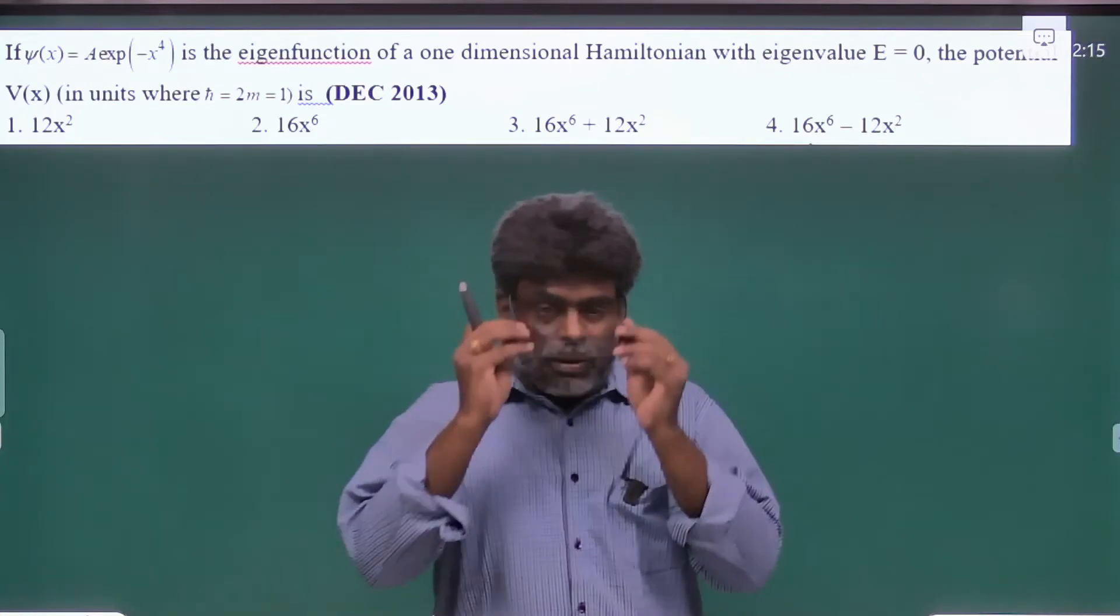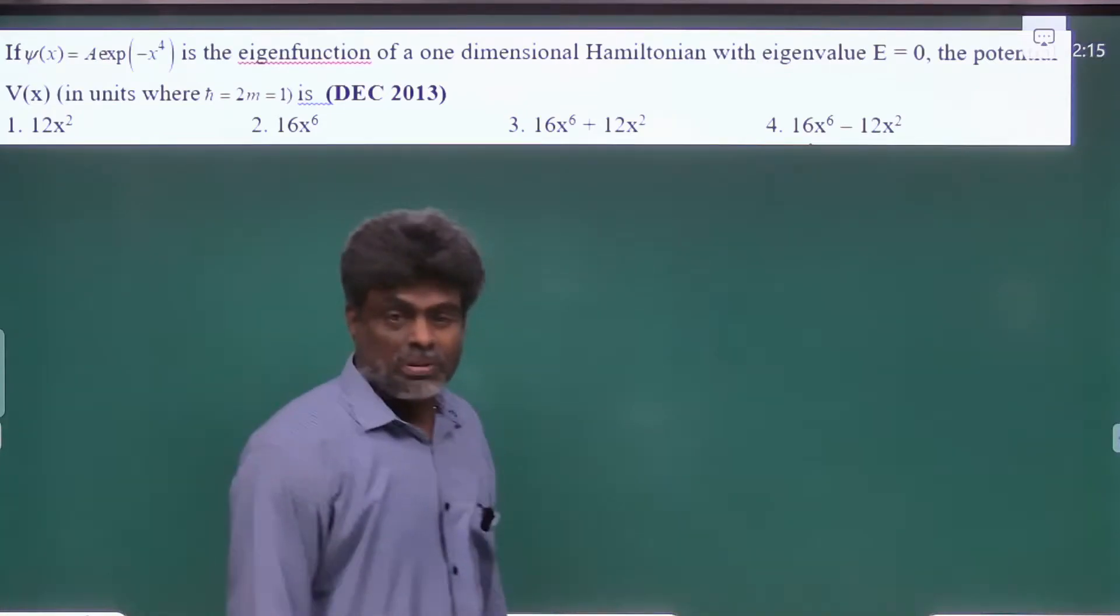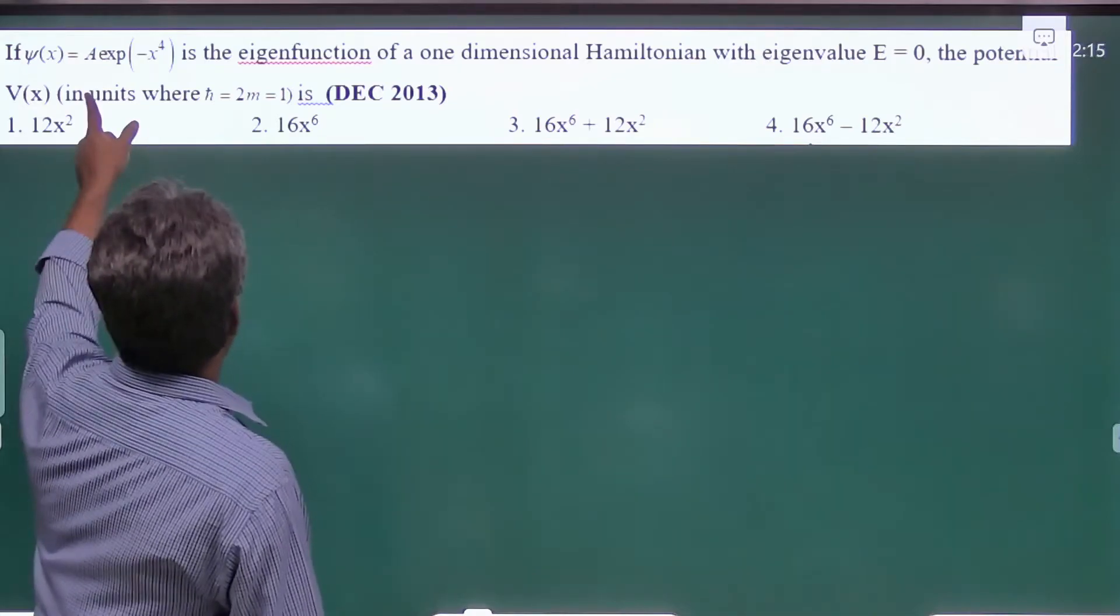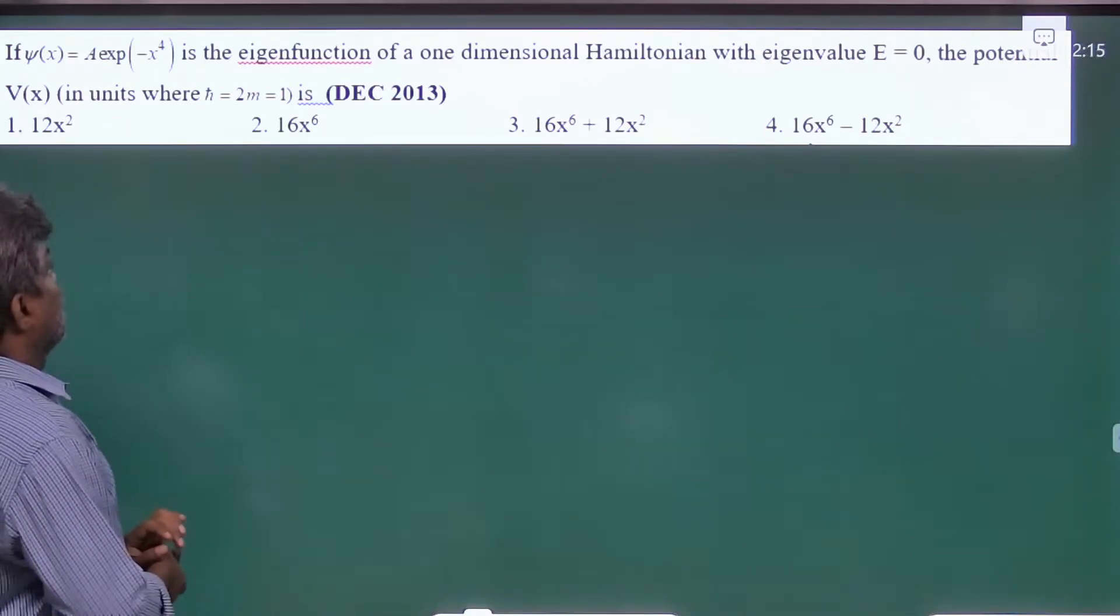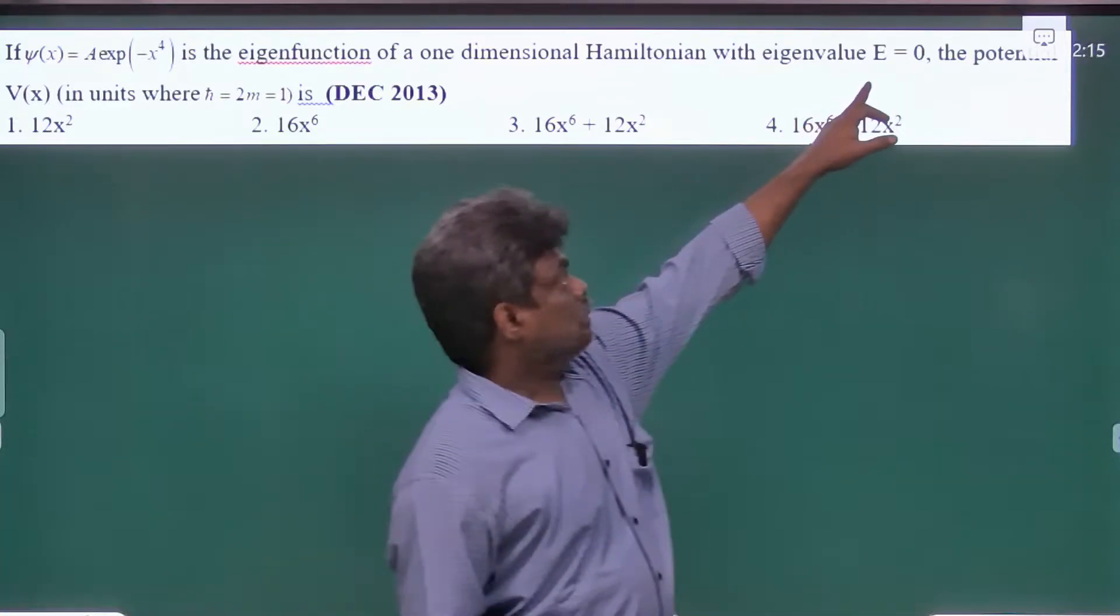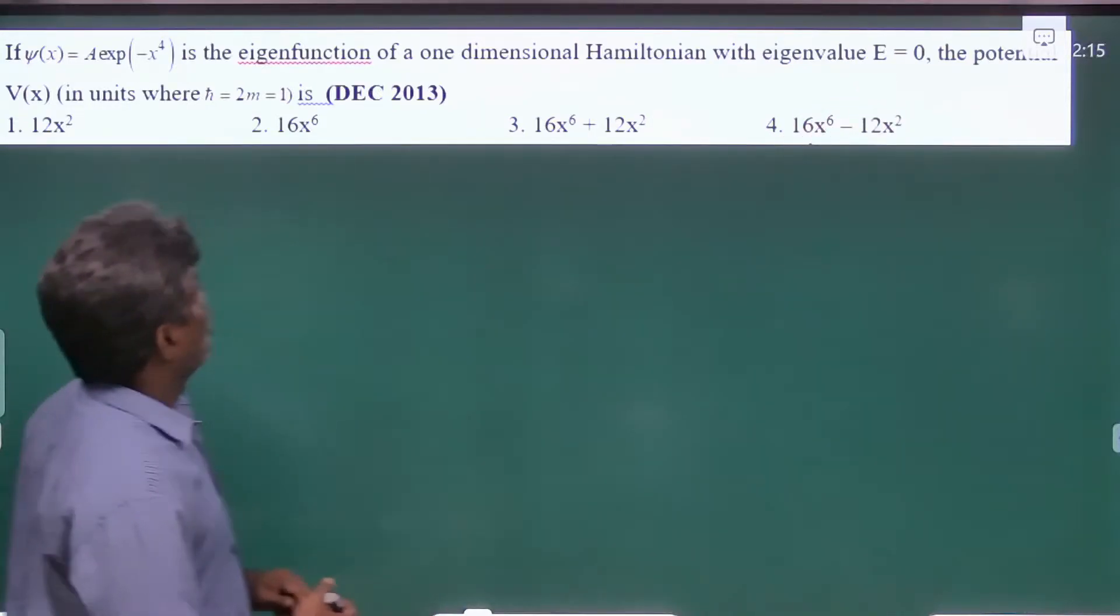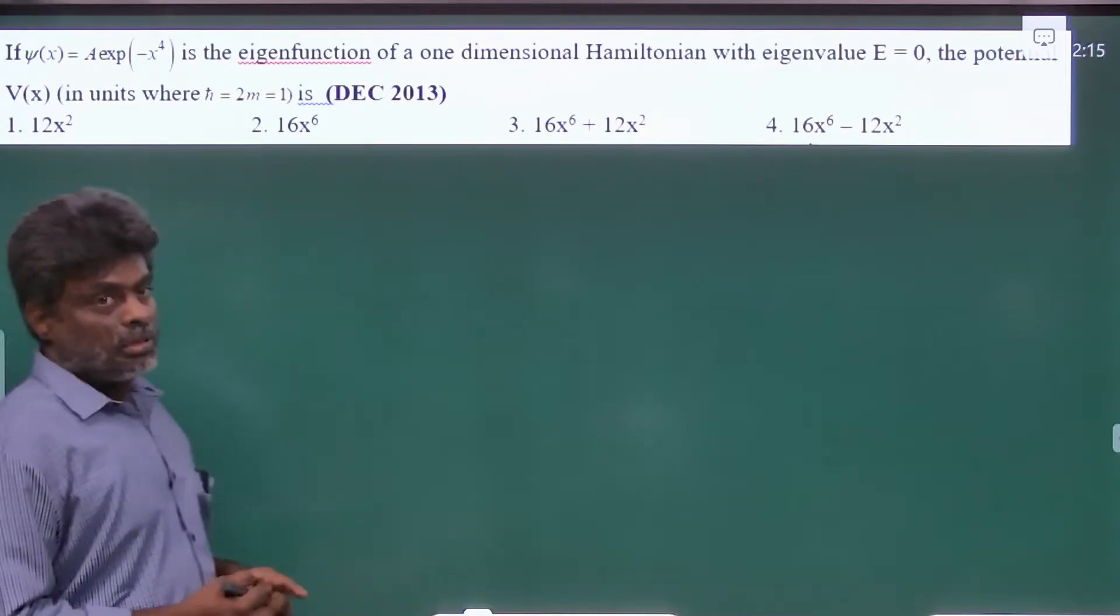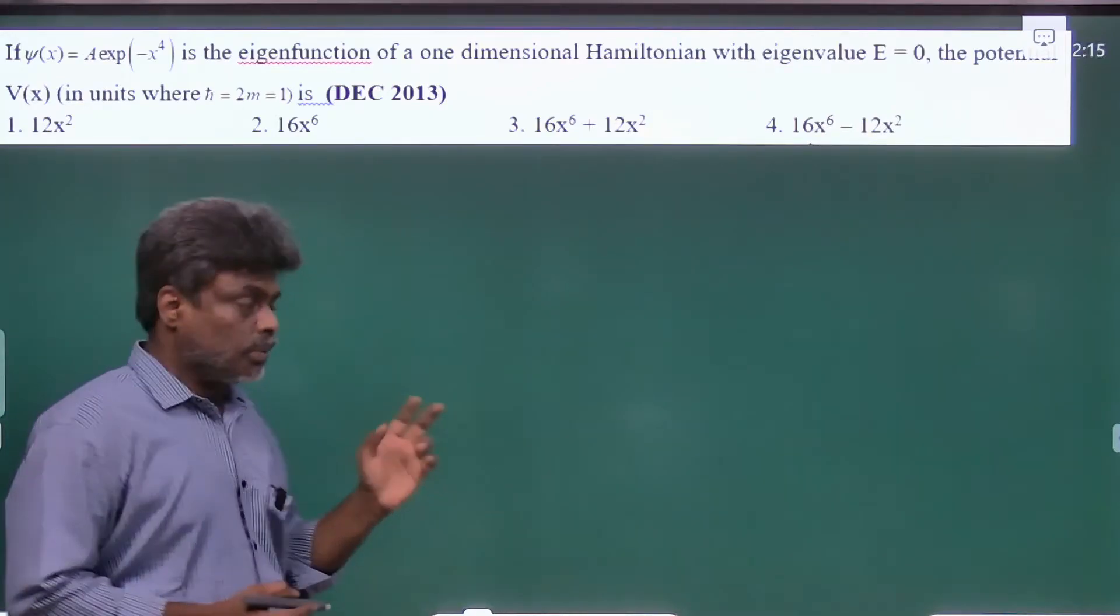Right, here they have given a wavefunction ψ = A·e^(-x^4) and the energy value is given as 0, and they are asking for the potential. This is the application of Schrödinger's equation.